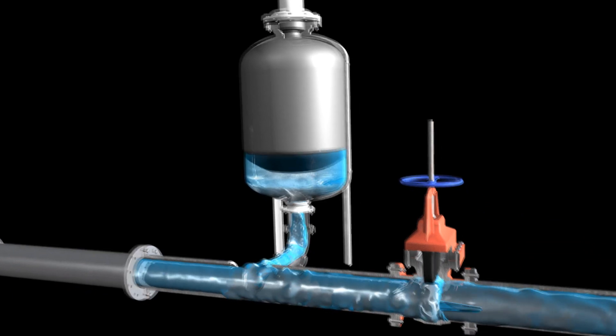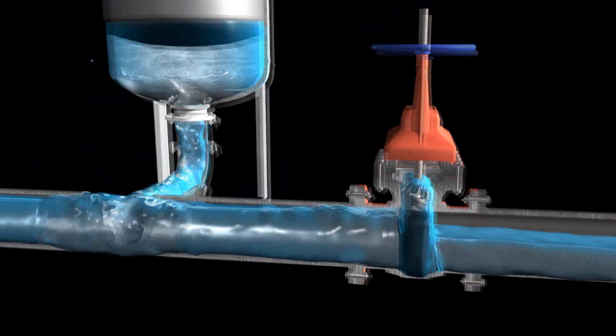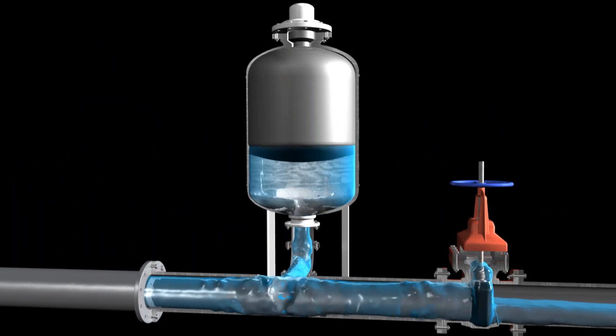When high pressures occur, such as a valve closing with the pump running, the piping pressure is dampened by further compressing the gas in the bladder.